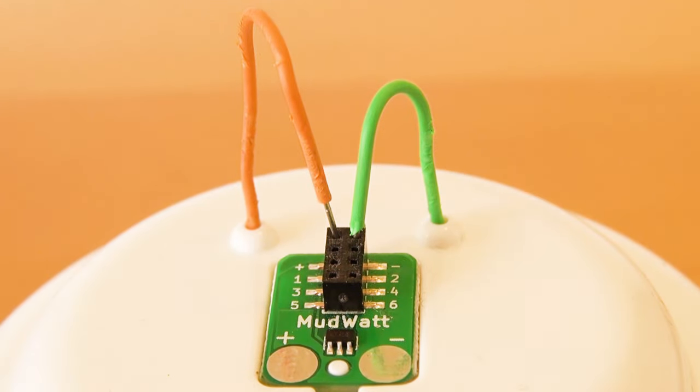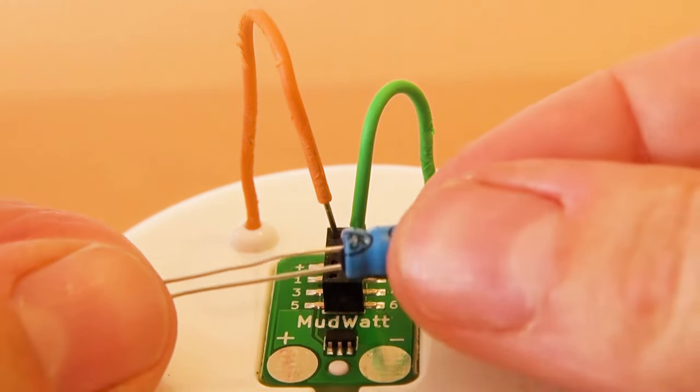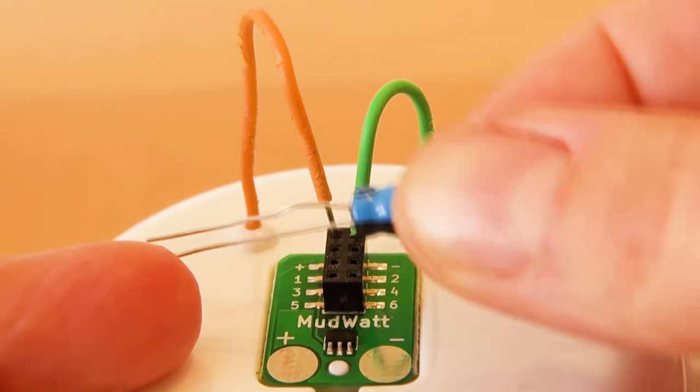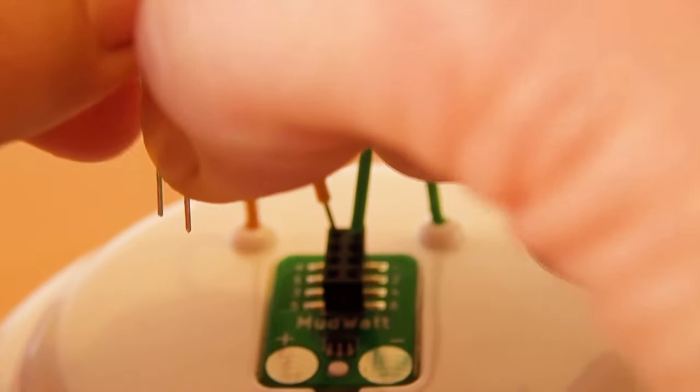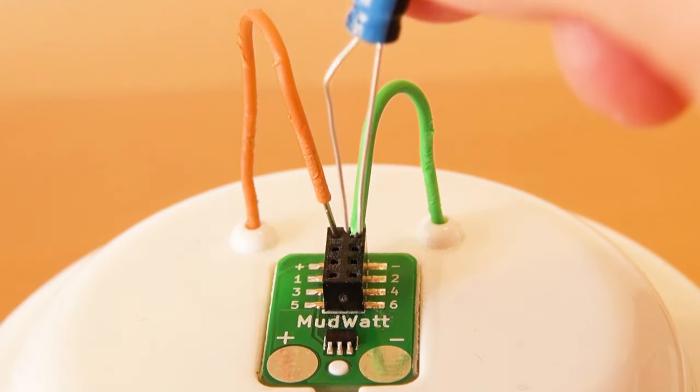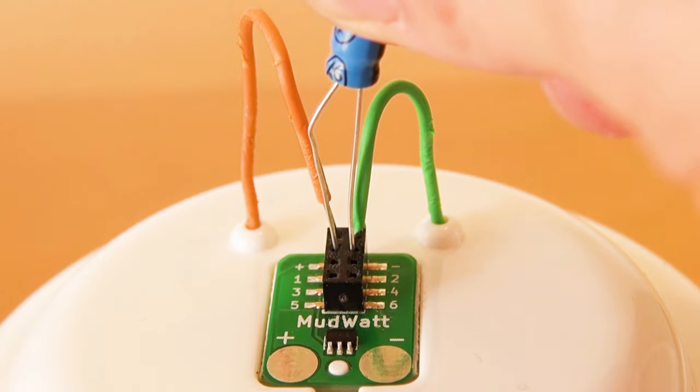Now we will set up the blinker mode for the microbial fuel cell. For this you will need the red LED and the blue capacitor. Notice that the capacitor has two leads, one long and one short. Take the long lead, bend it a little bit, then insert the long leg into pin one and the short leg into pin two of the hacker board.